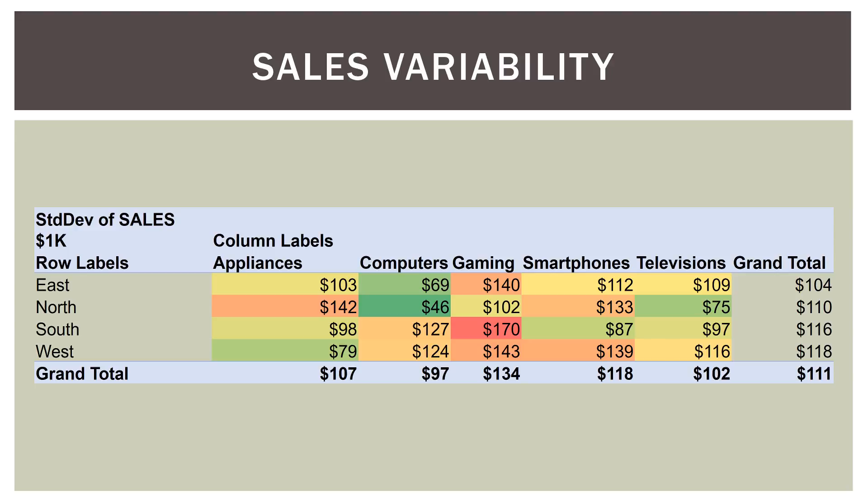What about variability? We can change the cross tabs to represent the standard deviation. Computers in the north region had a standard deviation of $46,000 — the least variation among all intersections. Gaming in the south had the highest variability in its sales. The north had the lowest regional variability at $110,000 standard deviation, and computers had the lowest segment standard deviation at $97,000, compared to the overall standard deviation for sales of $111,000.